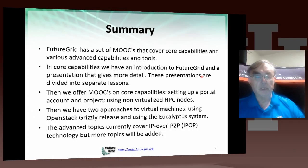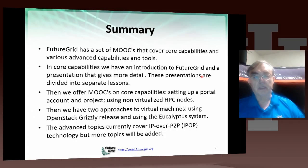These core capabilities are supplemented by advanced topics. Currently we have one on the IPOP system — IP over P2P — which can be used by FutureGrid projects. We will add more topics in this advanced area, including capabilities such as Hadoop and MapReduce, MPI, and things like that.